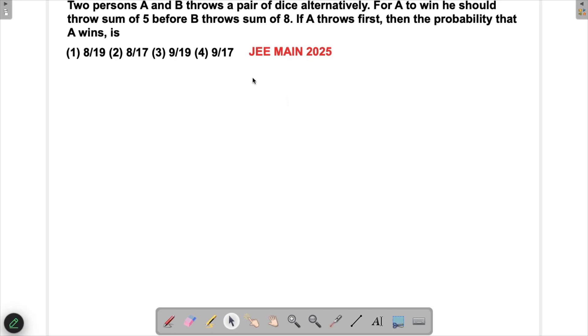Alright, so let's solve a problem which appeared in JEE Main 2025. This question is from probability and what it's saying is that there are two persons A and B throwing a pair of dice alternately, and for A to win he should throw sum of 5 before B throws a sum of 8.